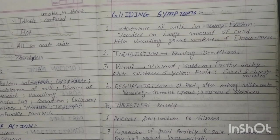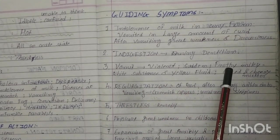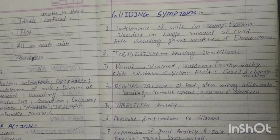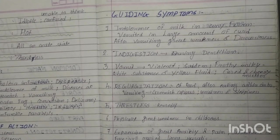Now let's see the guiding symptoms. Intolerance of milk in any form — meaning not just mother's milk, but dairy milk is also intolerable for the baby. Vomiting in large amounts — even if the baby has eaten a little, there will be vomiting in large amounts.